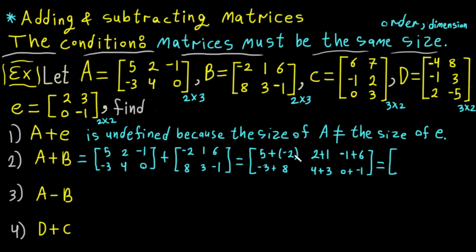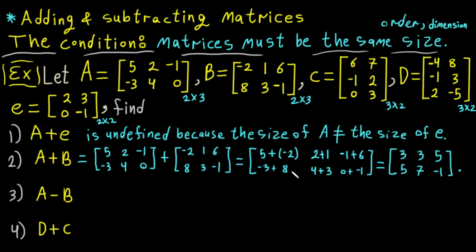Computing each entry: five plus negative two is three, two plus one is three, negative one plus six is five, negative three plus eight is five, four plus three is seven, and zero plus negative one is negative one. So we have computed A plus B.